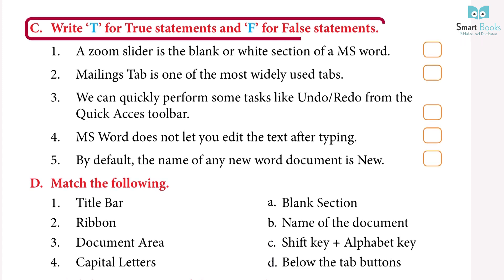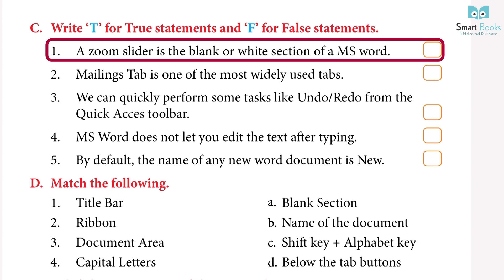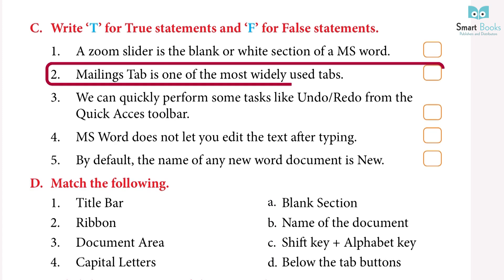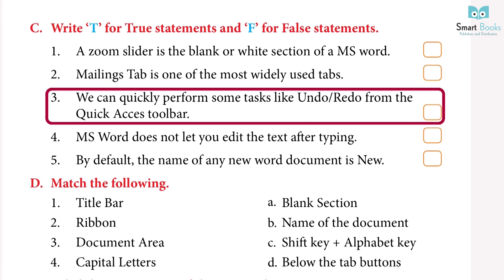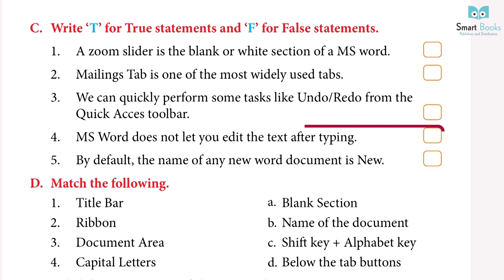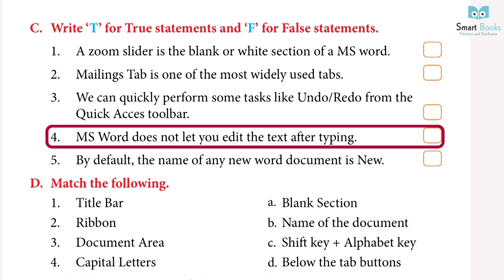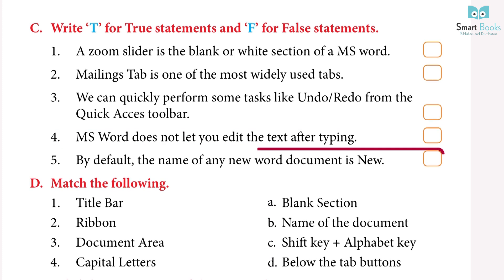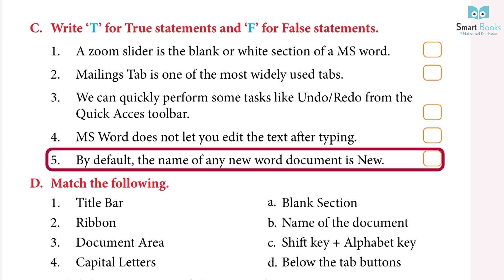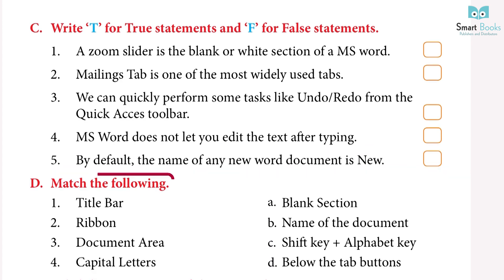Write T for true and F for false: one, a zoom slider is the blank or white section of MS Word — False; two, Mailing tab is one of the most widely used tabs — False; three, we can quickly perform tasks like undo and redo from the Quick Access Toolbar — True; four, MS Word does not let you edit text after typing — False; five, by default the name of any new Word document is 'New' — False.